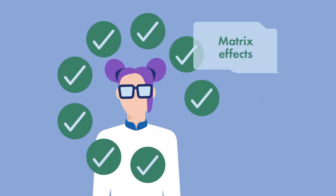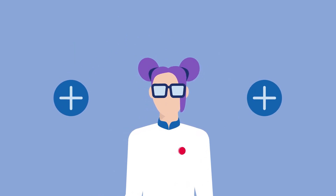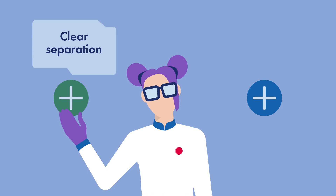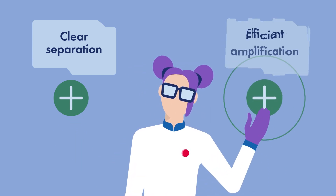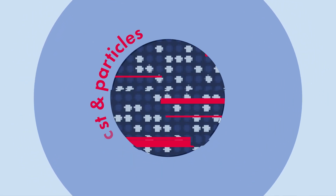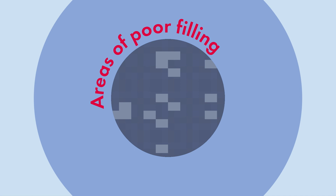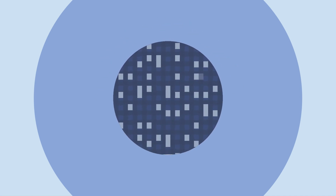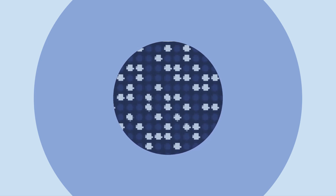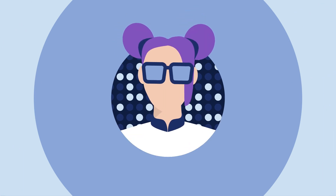Matrix effects are some of the parameters that, when properly checked, can influence positive outcomes such as clear separation between positive and negative partitions and efficient amplification. To ensure accurate analysis based on valid partitions, artifacts such as dust and other particles, low amplification areas, and areas of poor filling or imaging — if any — that could influence the result analysis are removed from the images by automatic corrections done by the software, and do not require any action on your part. Re-imaging the plate is always an option.